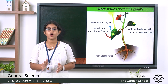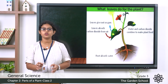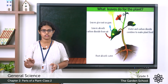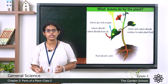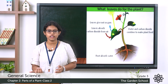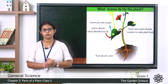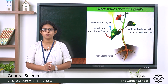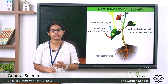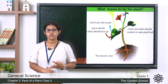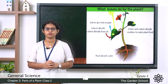So today we learned about leaves — that they differ in shape and size, and that the main function of a leaf is to help the plant prepare food. We have now covered three parts of a plant: the root, the stem, and the leaves. Let's meet in the next class. Thank you.